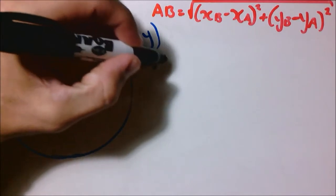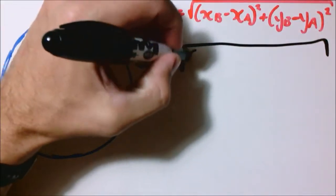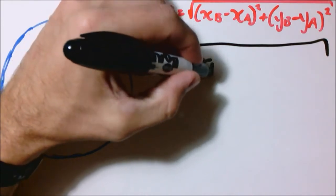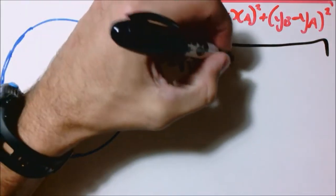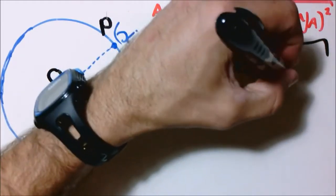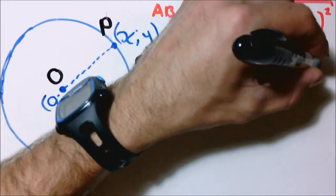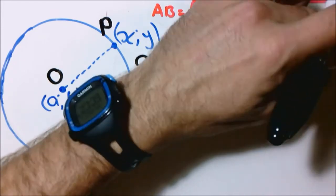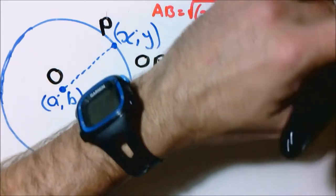So OP equals square root of bracket XP minus XO bracket square plus YP minus YO bracket square.